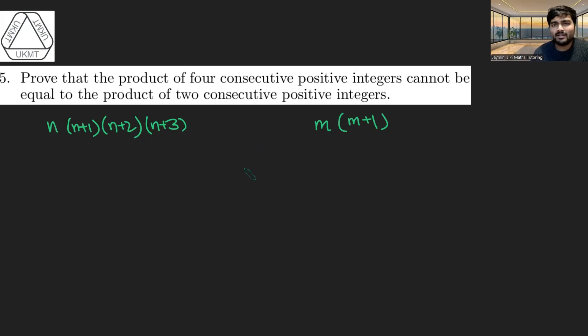And we want to show that these two things can't ever be the same. Well, let's suppose for contradiction that they are the same. We could expand this and get a very horrible looking expression. And so we don't really want to do that because we're going to get a quartic here or quadratic here.